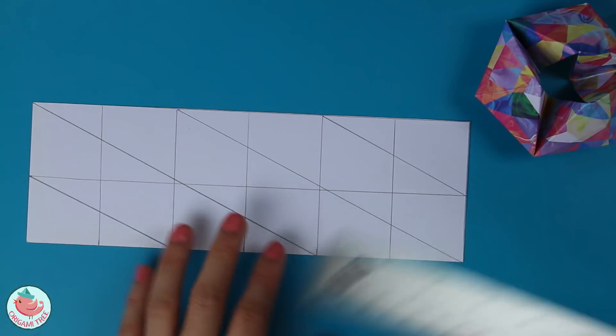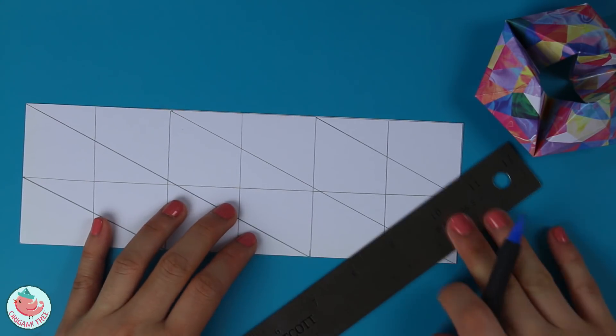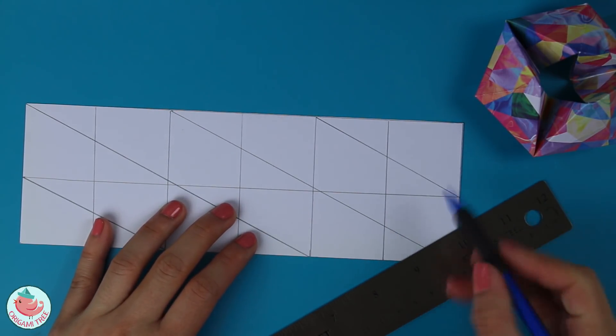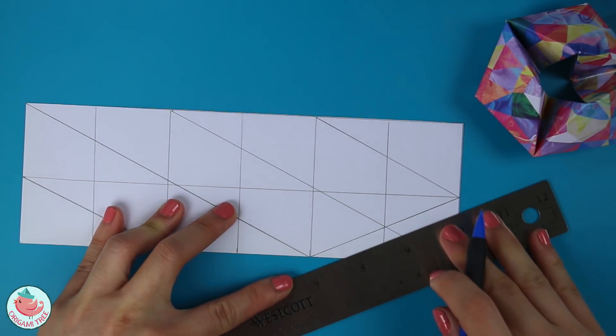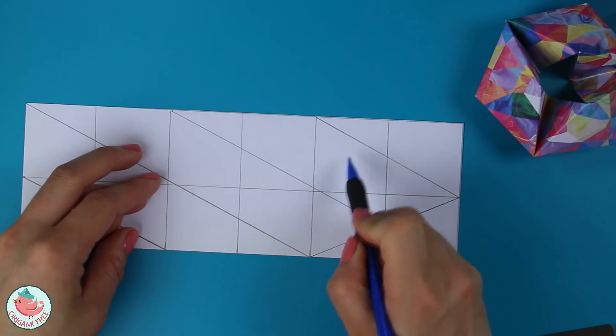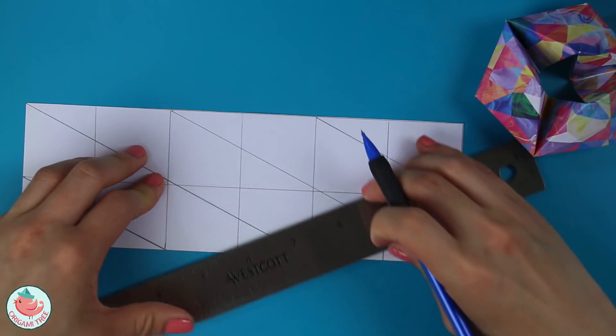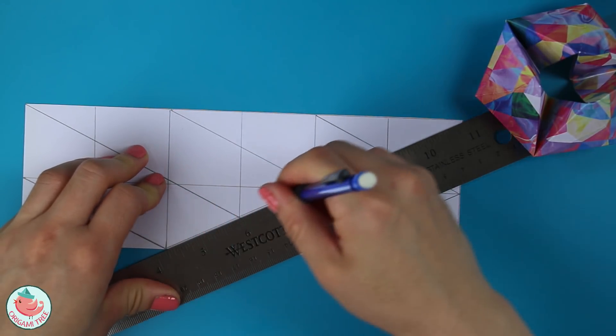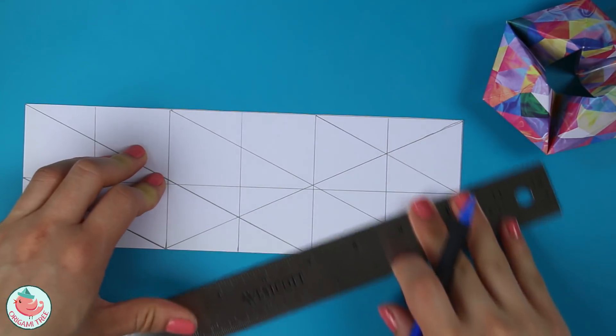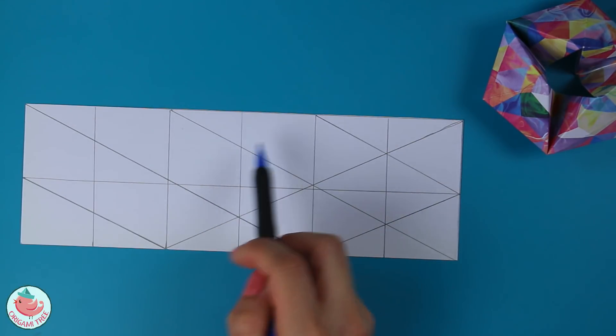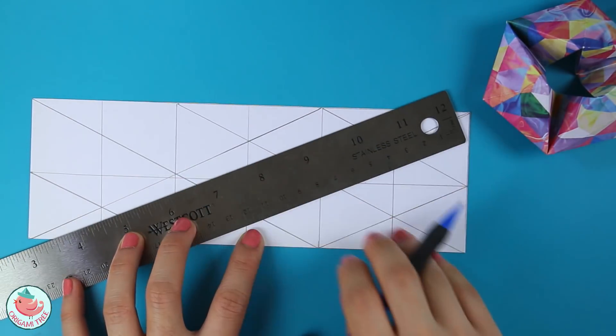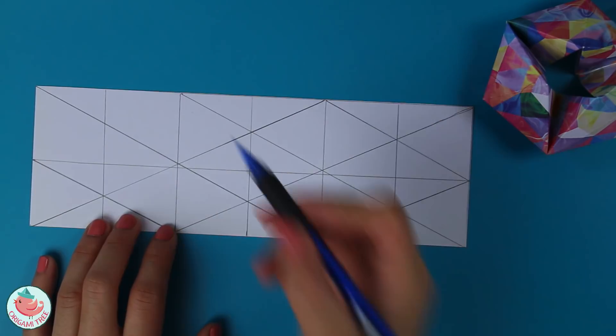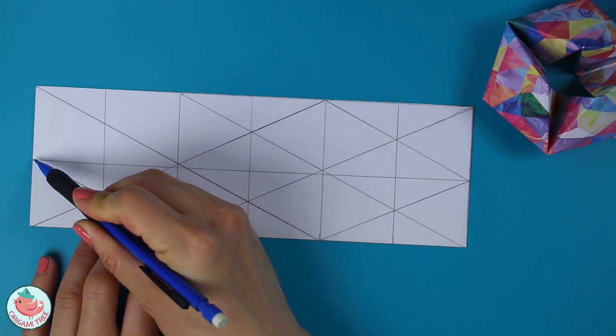And now we're going to do the same thing on this side. So first diagonal line we're going to draw is going to be from this corner to this corner. We're going to cross these four squares. Now a line across these four squares. And finally a line from here to here.